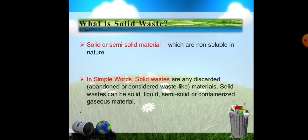Solid or semi-solid material which are non-soluble in nature — this is solid waste. In simple words, solid waste are any discarded or abandoned or considered waste-like material. Solid waste can be solid, liquid, semi-solid, or containerized gaseous material.